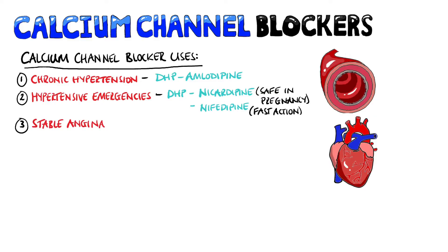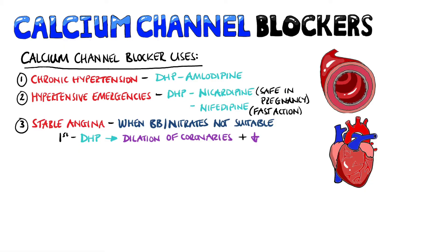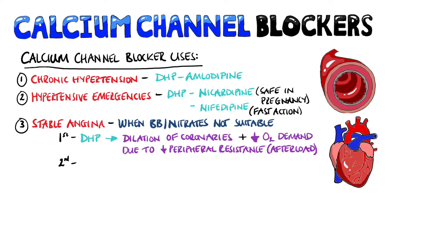For stable angina, calcium channel blockers are usually given if beta blockers or nitrates are contraindicated or not working. Dihydropyridine calcium channel blockers like amlodipine are often used first; they lead to dilation of the coronary arteries and reduce oxygen consumption through decreased peripheral resistance, meaning decreased afterload — so the heart pushes against less resistance and uses less oxygen. Non-dihydropyridines may also be used, as they decrease heart rate and contractility, reducing myocardial oxygen demand.